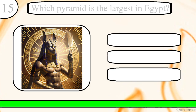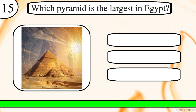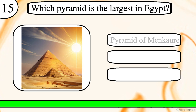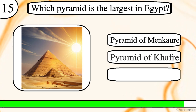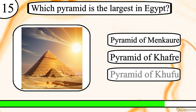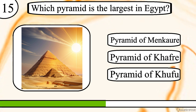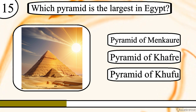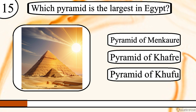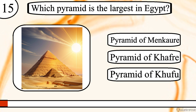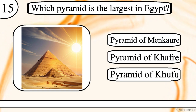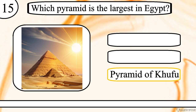Question 15. Which pyramid is the largest in Egypt? Pyramid of Menkor, Pyramid of Khafre or Pyramid of Khufu? The correct answer is Pyramid of Khufu.